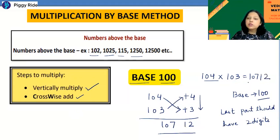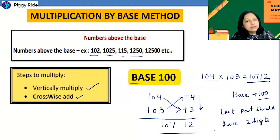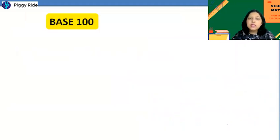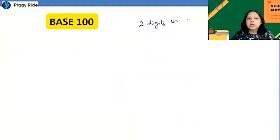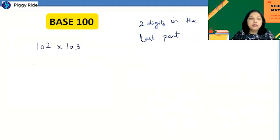It is so simple with the Vedic maths base method — no need for long calculations. This example was based on base 100. Remember: base 100 means two digits in the last part. Let's take another example: 102 × 103. Write it down the same way: 102 and 103, with deviations +2 and +3.